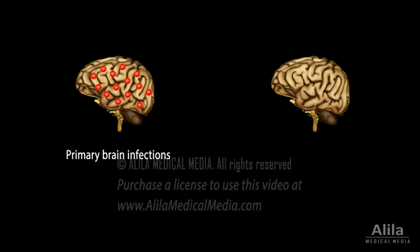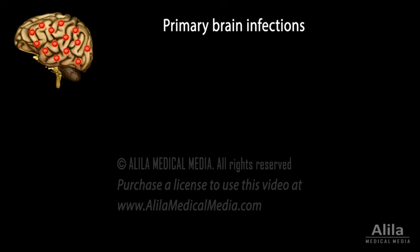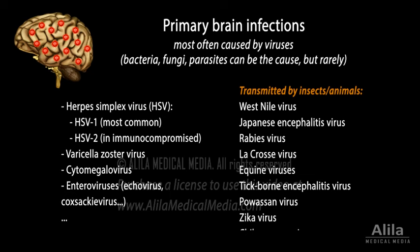Encephalitis can result from brain infections or autoimmune reactions in which the body's immune system mistakenly attacks its own tissue. Primary brain infections are most often caused by viral invasion. A large number of viruses can be potential culprits, some of which are carried by mosquitoes, ticks, and other insects or animals.